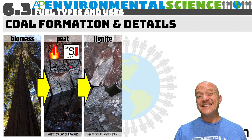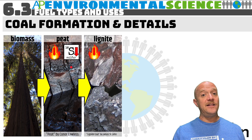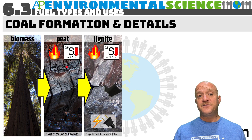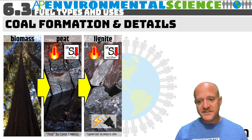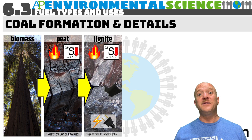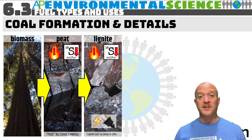The next stage is lignite, often called brown coal. Lignite has a low heat content and a low sulfur content compared to other forms. Lignite is typically used for the generation of electricity — at least in the United States and around the world, electricity generation is predominantly done through lignite. Lignite is more plentiful, but it is not a pure form of carbon, and there are definitely other pollutants present.